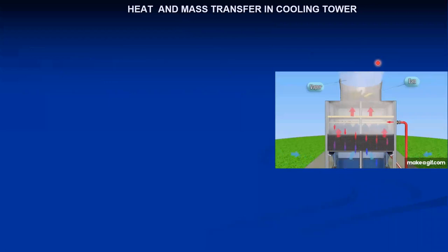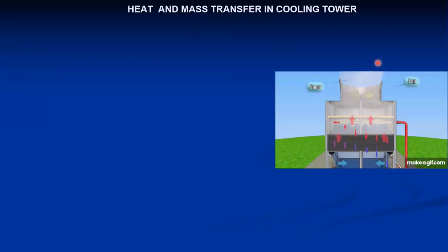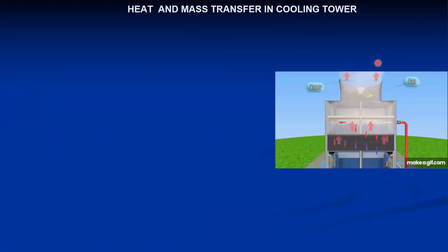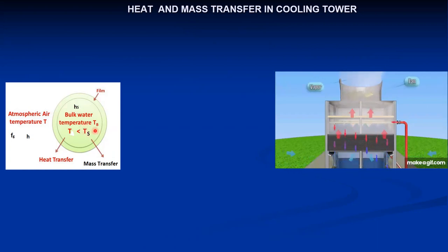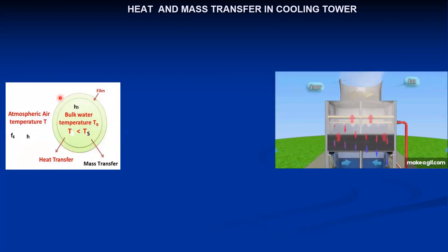A cooling tower is a type of heat exchanger. Especially in a direct contact cooling tower, the air and water come in direct contact with each other, and during this contact the air takes away the heat of water. At the same time, some water also evaporates along with the air. Now if we consider a particular water droplet of temperature TS — the water temperature, also called the saturation temperature — surrounding this water droplet, an air film is generated, and surrounding that is the atmospheric air, which is actually a forced air.